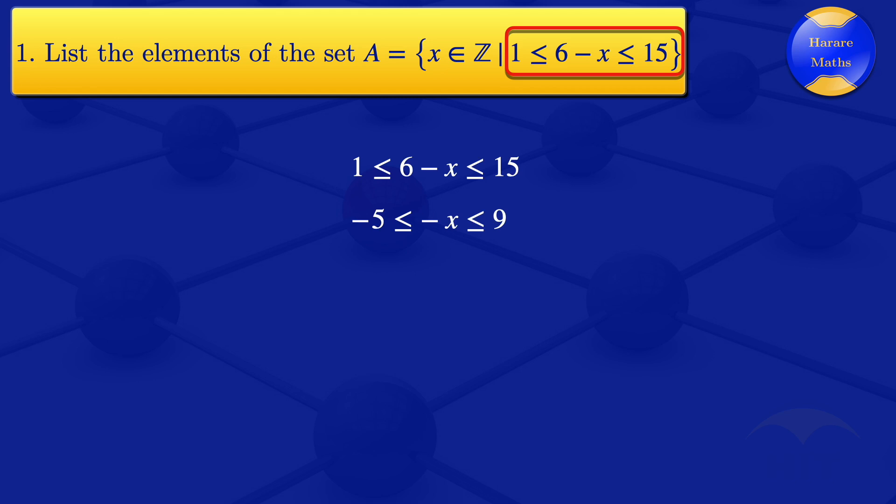15 minus 6 gives us 9. So we have minus x is between minus 5 and 9. But what we want there is the values for x. So to get the x, we can multiply by a minus sign. And remember that when you multiply by a minus sign, the signs change there. So x is between 5 and minus 9. And I can rewrite that as x greater than or equal to minus 9, but less than or equal to 5.